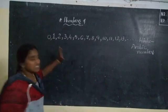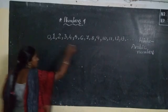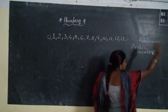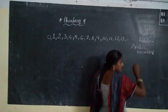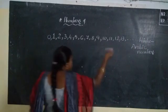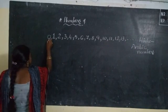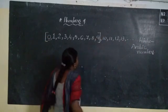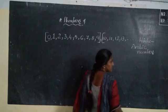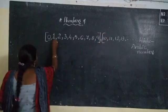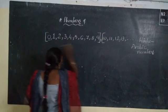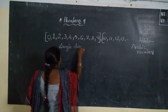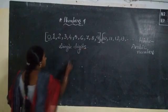Observe the black box grid. I wrote from zero to thirteen — there are so many numbers. From zero to nine, if you observe, these are different from the other numbers. Zero, one, two, three, four, five, six, seven, eight, nine — all these are called single-digit numbers, and they are simply called digits.